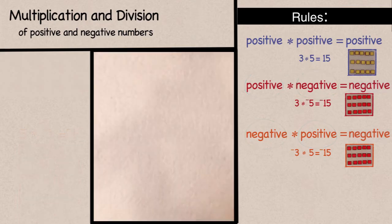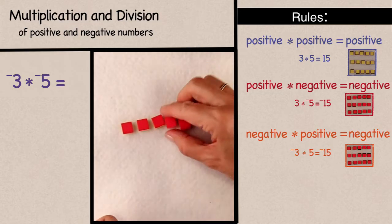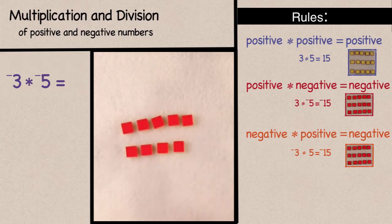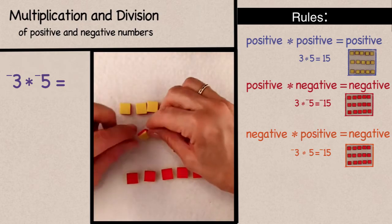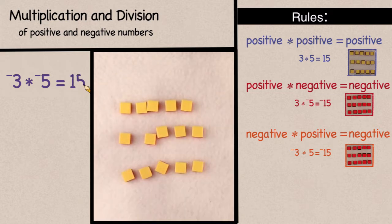Now let's consider negative 3 times negative 5. Again, we will think of the negative sign as meaning the opposite of. So you could solve this problem by doing 3 times negative 5, and then taking the opposite of that answer. 3 times negative 5 was negative 15,